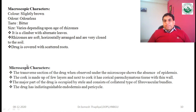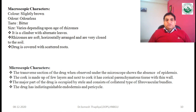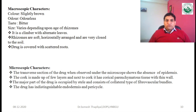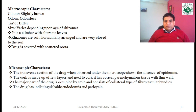Regarding macroscopic characters of Dyscoria: color is slightly brown, odorless, taste is bitter, and size varies depending on the age of the rhizomes. It is a climber with alternate leaves; rhizomes are soft, horizontally arranged, and very close to the soil. The drug is also covered with scattered roots.